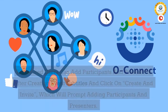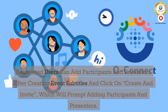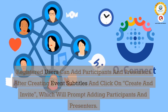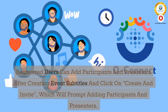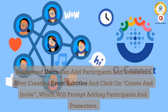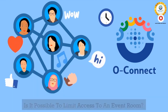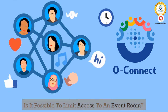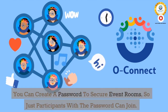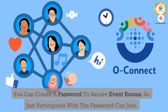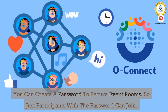7. How to add attendees? Registered users can add participants and presenters after creating event subtitles and click on 'Create an invite,' which will prompt adding participants and presenters. 8. Is it possible to limit access to an event room? You can create a password to secure event rooms, so only participants with the password can join.